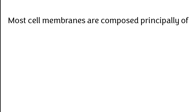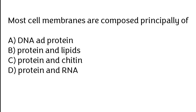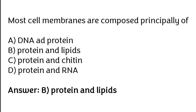Most cell membranes are composed principally of: DNA and protein, protein and lipids, protein and chitin, or protein and RNA. The correct answer is option B. Most cell membranes are composed principally of proteins and lipids.